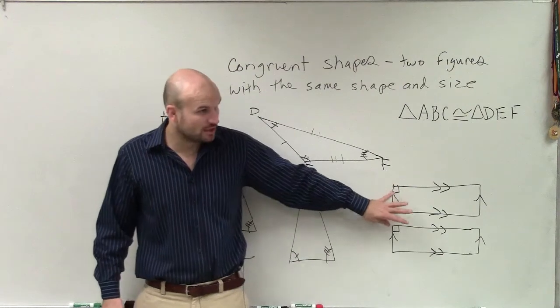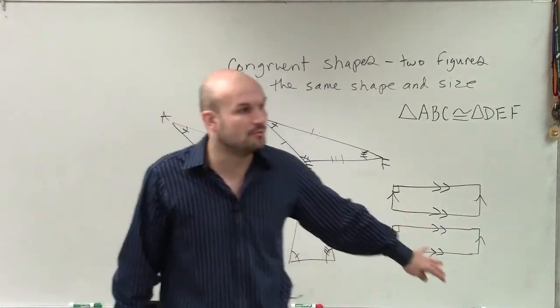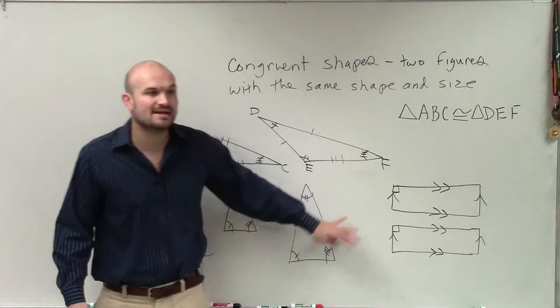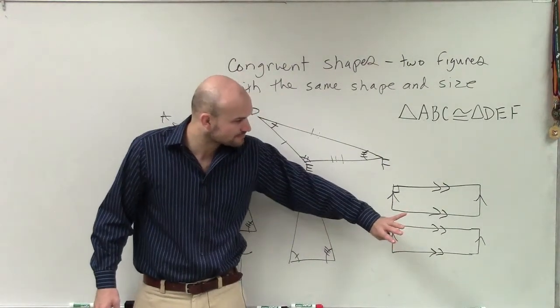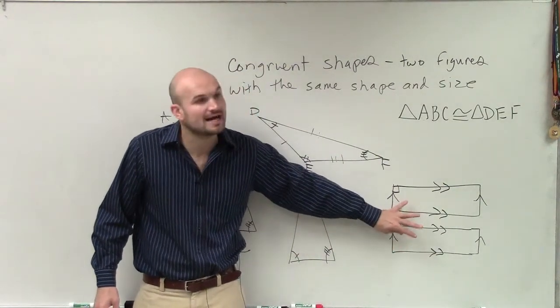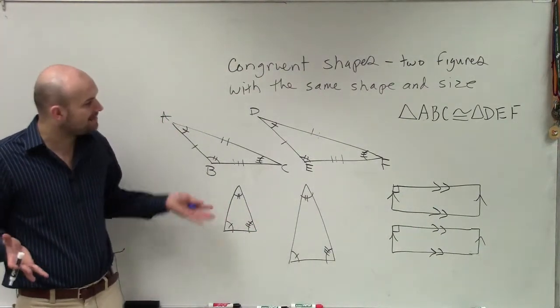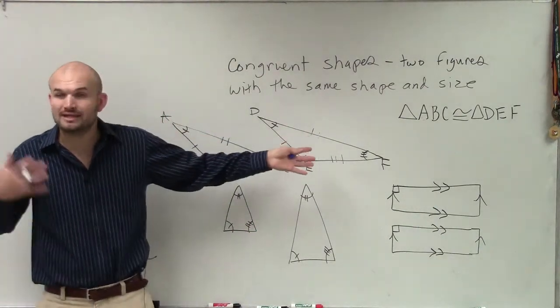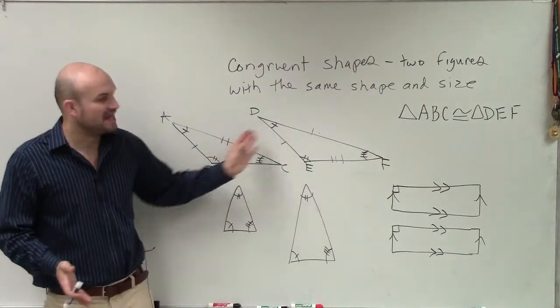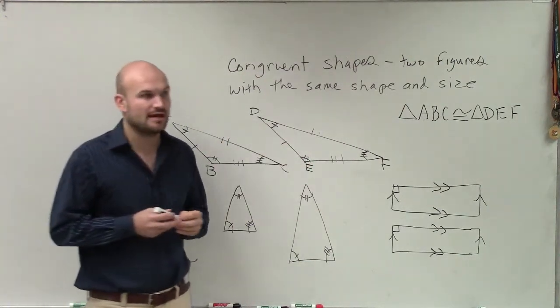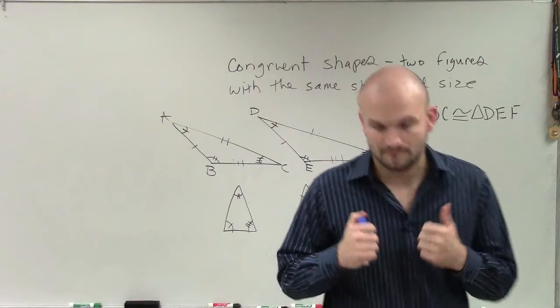So parallel lines do not prove congruency. They will help us allow us to use congruency when we talk about the transversal and different angles. But as of right now, just on the forefront of this, these are not congruent rectangles, and these are not congruent triangles. You have to have congruent parts equal in size and the shape of them be equal for them to be congruent.